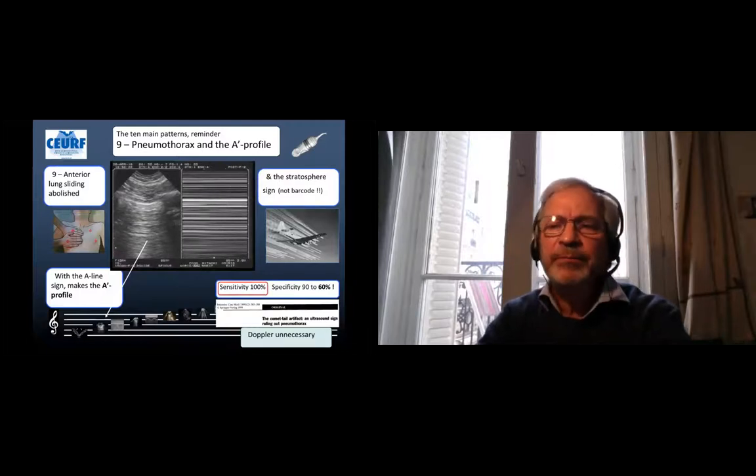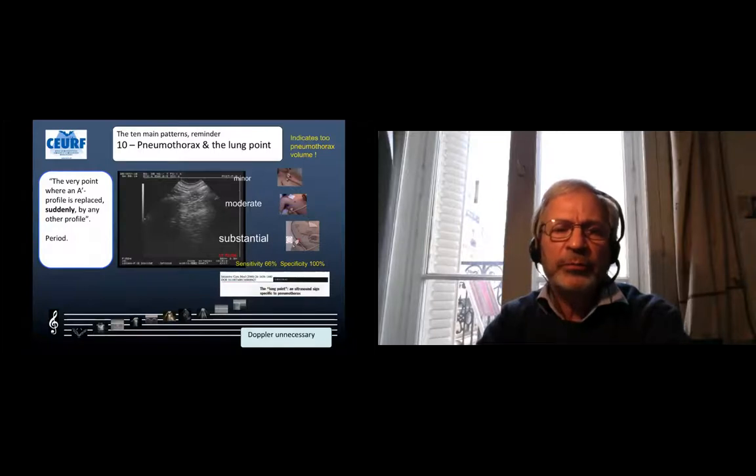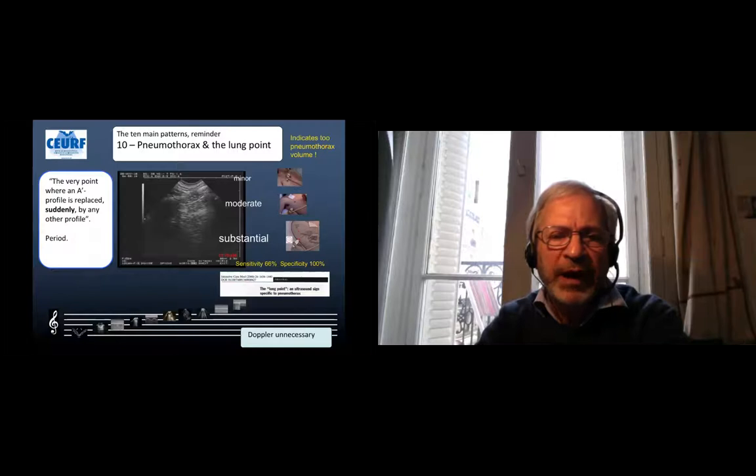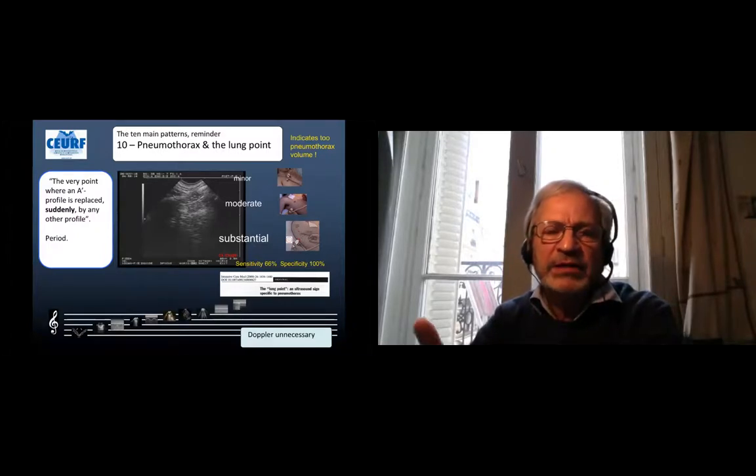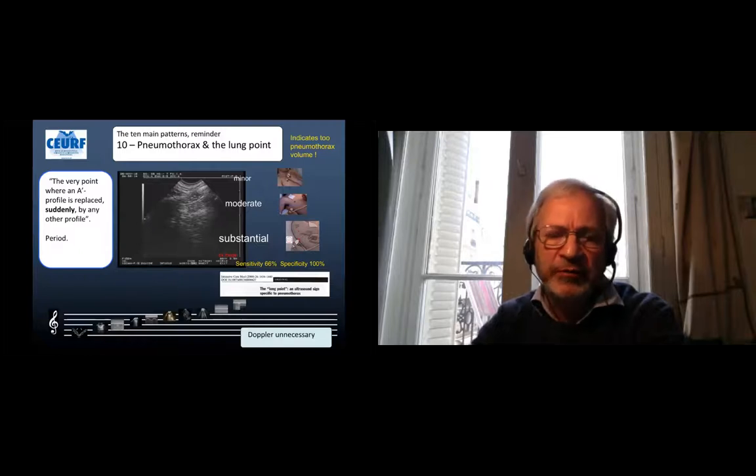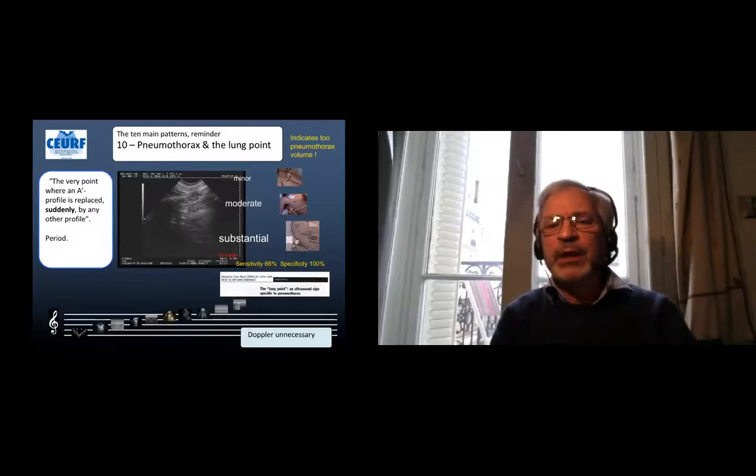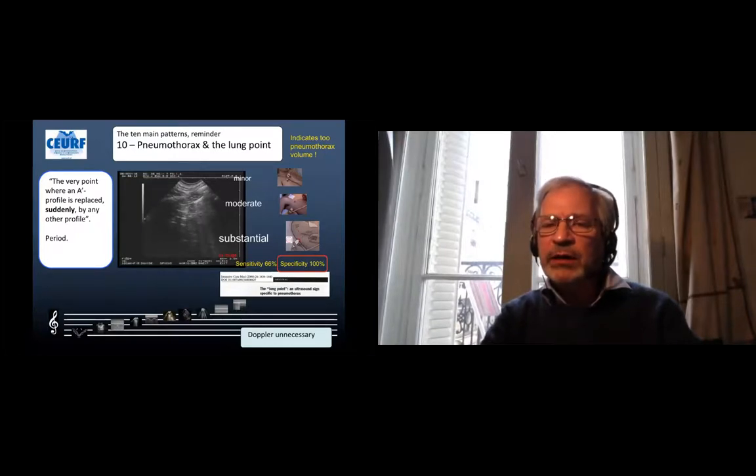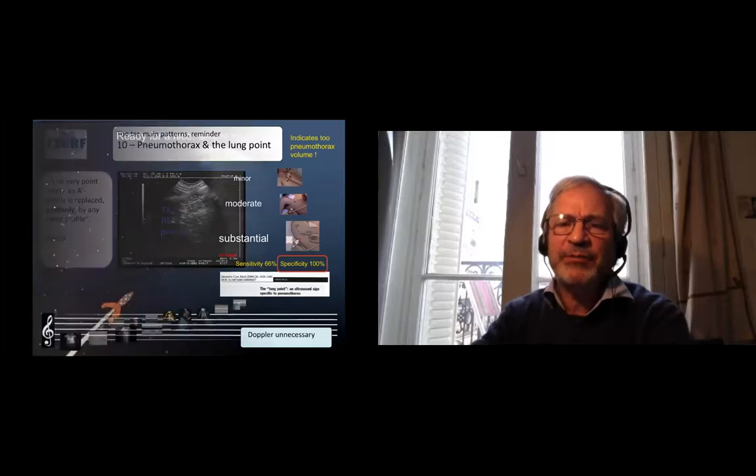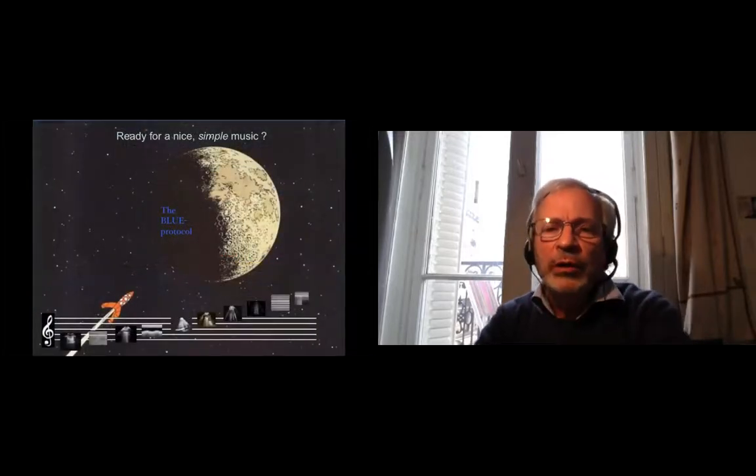The A-line is already in the scale, fully sensitive, not specific. For being specific we need to have the lung point. The lung point is a very point where an A-prime profile is suddenly replaced by any other profile. So I put the video and we can see that in a respiratory rhythm, something comes from the right, on-off, suddenly. This something is a bit of lung sliding, a bit of B-lines. This is the lung point. We know that this is a pneumothorax. The location of the lung point indicates the volume of the pneumothorax. And once again the Doppler is not necessary.